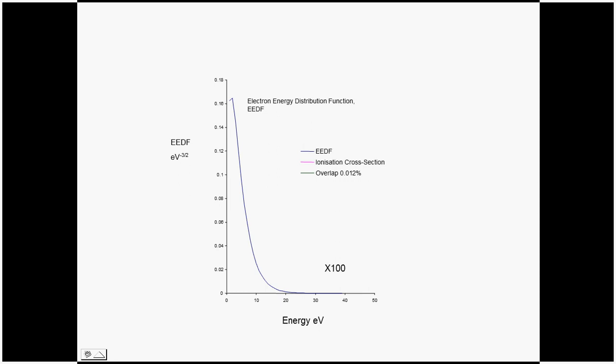Now in a gas, you would normally have an ionization cross section. This is a made up cross section here, starting off at some 20 electron volts, rising up and then peaking around 30 electron volts. Now we can see that most of the electrons don't have enough energy to ionize the gas. So it takes about 20 eV for this particular gas, this made up gas, to be ionized.